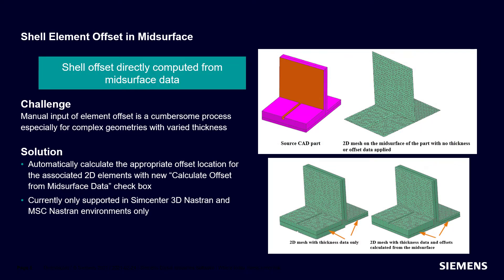The 'Calculate Offset from Mid-Surface Data' option is only available when the thickness source is set to mid-surface and the thickness evaluation type is set to 'at element centroid'. This feature is currently only supported in the Simcenter 3D Nastran and MSC Nastran solver environments.